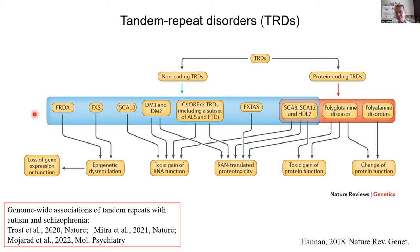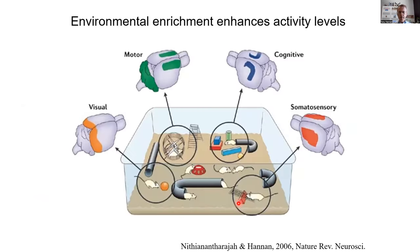Across these more than 50 monogenic tandem repeat disorders, fragile X syndrome is a major neurodevelopmental disorder, but there are a couple of others that have neurodevelopmental components as well. The main environmental factors that we started with were cognitive stimulation and physical activity.